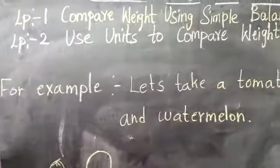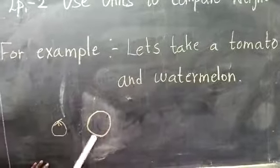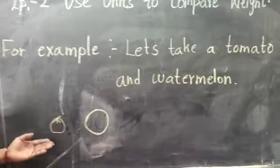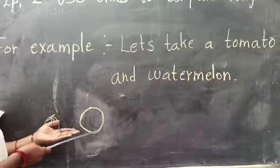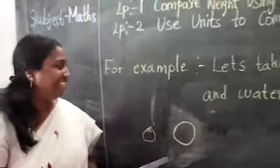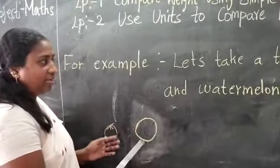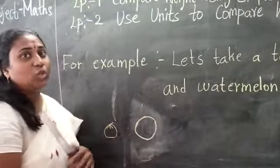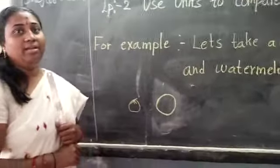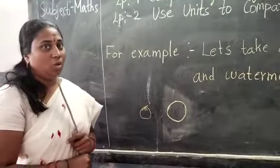For example, let's take a tomato and watermelon. Which will be heavier? We can easily tell — watermelon is heavier. But if we take a lemon and tomato, can you tell which is heavier? No. For that only, we will use a simple balance.